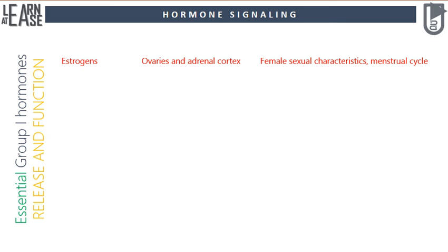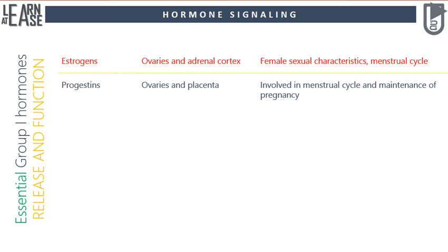The first Group 1 hormone is estrogens — a family of hormones produced and released by the ovaries and adrenal cortex, essential for female sexual characteristics and the menstrual cycle. Second, progestins — a family of hormones produced and released by the ovaries and placenta, essential for controlling the menstrual cycle and maintenance of pregnancy.